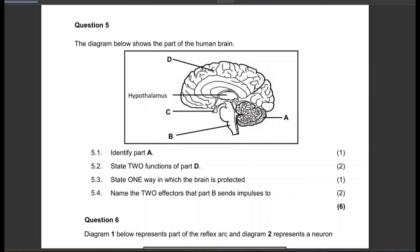Identify part A — part A is the cerebellum. Remember: cerebrum and cerebellum — the cerebellum is at the back. State two functions of part D.